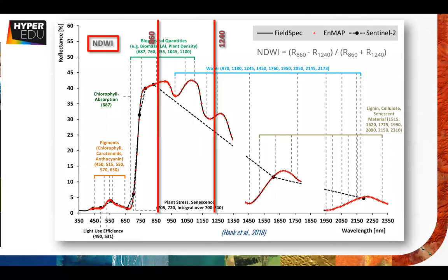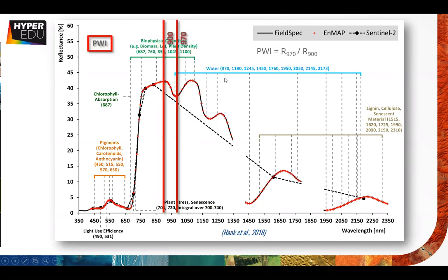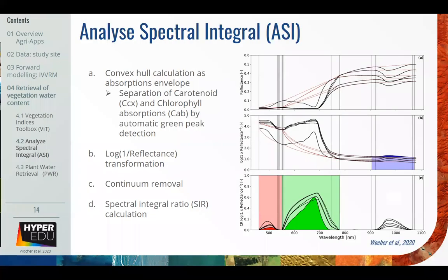These indices work by having a reference band in the red edge and one band in the second water absorption band which goes up and down with more water. The other index does the same for the first water absorption band. We get our first result, but we have other maybe more suitable methods to estimate water content - so now we're going to use the integral approach.